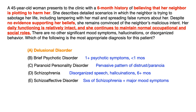Choice C, paranoid personality disorder — the key takeaway for personality disorders is that the test writer would describe a pervasive pattern of traits. This wouldn't just be a six-month history in a 45-year-old; personality disorder traits are fixed and rigid throughout life, especially growing up. A sudden six-month history rules out personality disorder, as they would describe a chronic, pervasive pattern of distrust and paranoia.